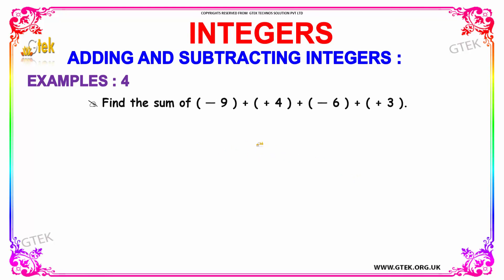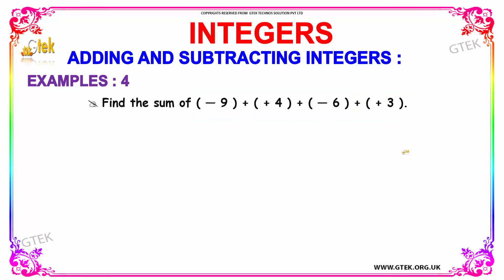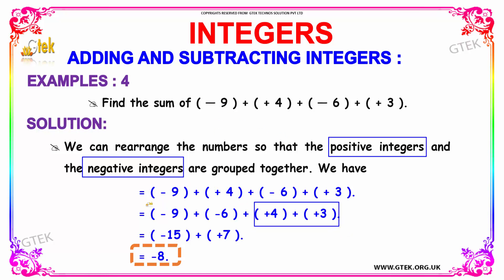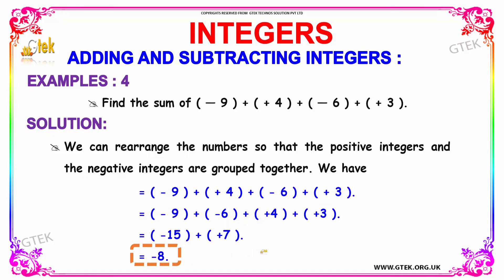We have an example in which we have to find the sum of minus nine, plus four, plus minus six, plus positive three. Here we have to rearrange the numbers so that the positive integers and the negative integers are grouped together. The positive integers — plus four and plus three — are taken to the right, and the negative integers — minus nine and minus six — are grouped to the left. When you add your negative integers you get minus fifteen, and when you add your positive integers you get plus seven. So the resultant will be minus eight.